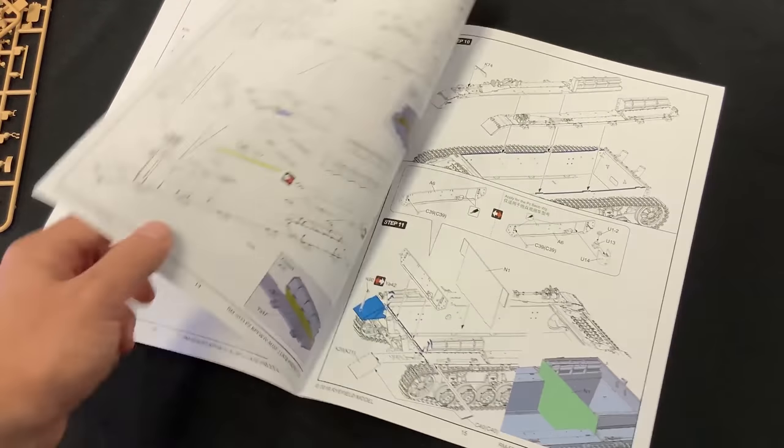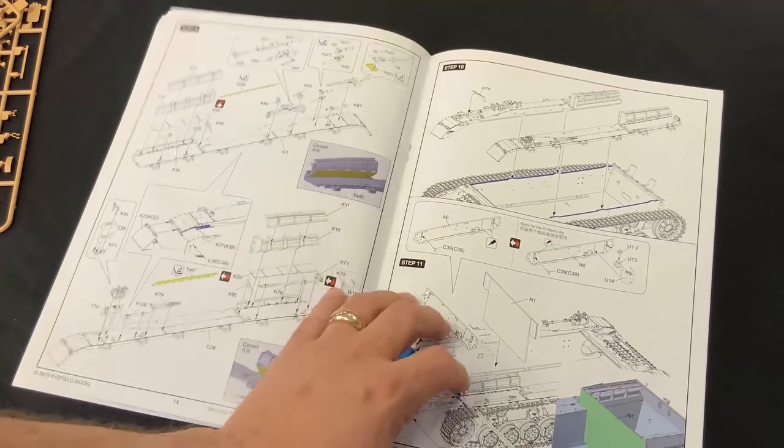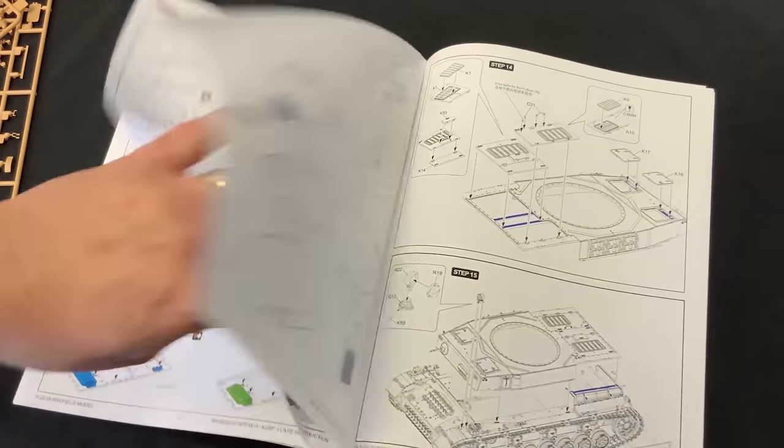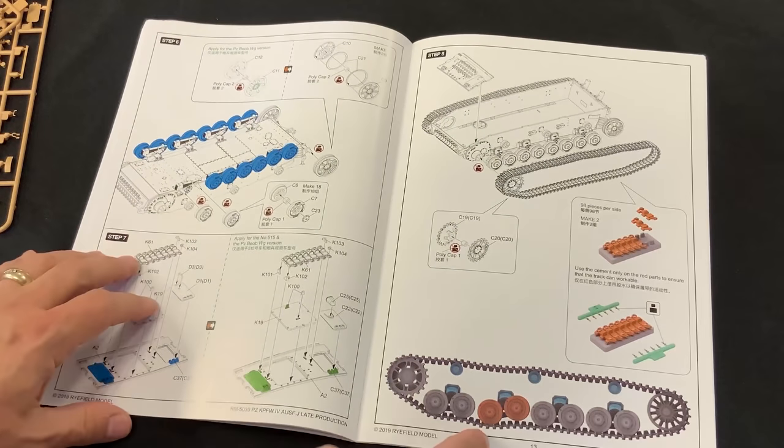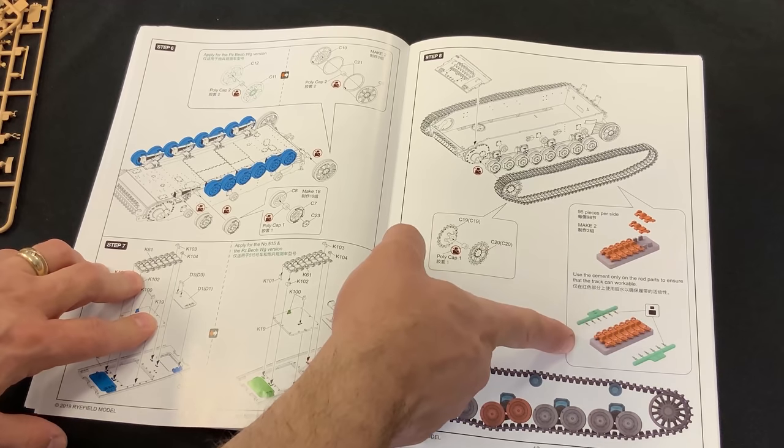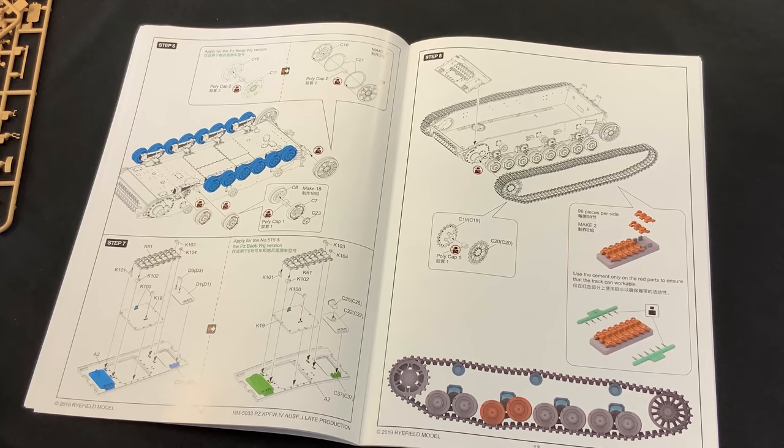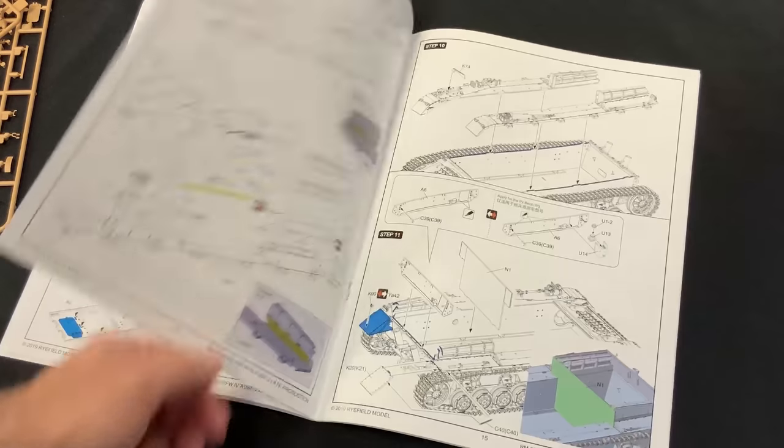Same thing with the photo etch. They show the photo etch parts as in photo etch brass color. In fact, the suspension they're showing you the different colors and how the tracks, there is a track jig inside that you can go ahead and put, just stack those tracks up, slide them in, boom, it's ready to go. So I don't think those tracks would be very difficult.